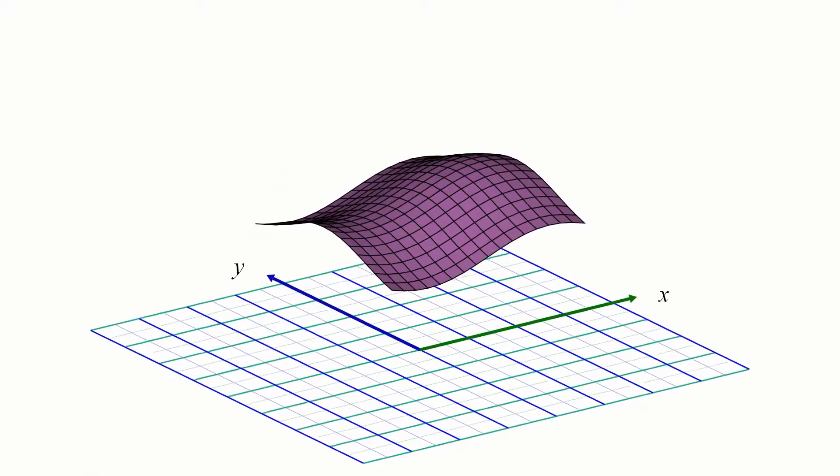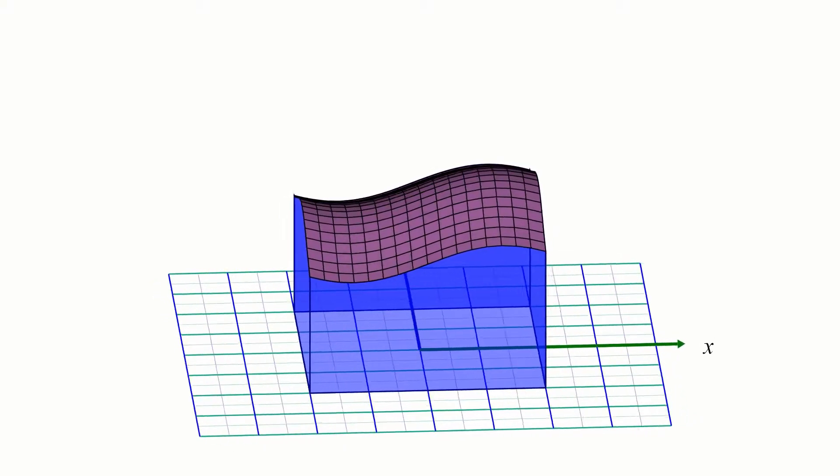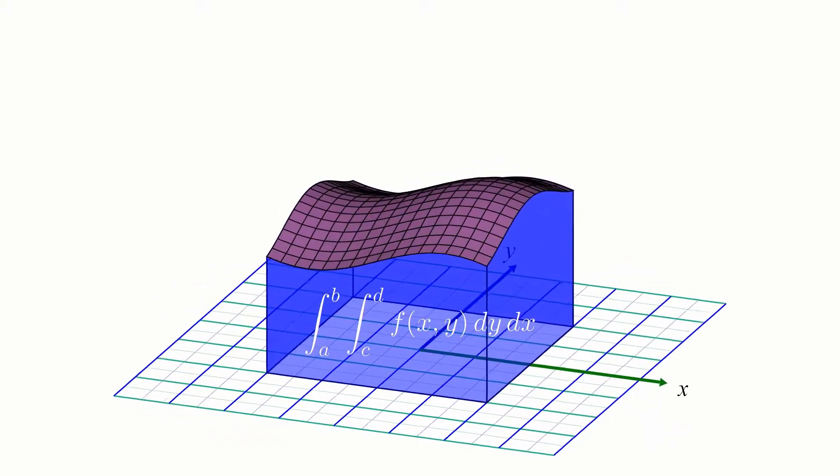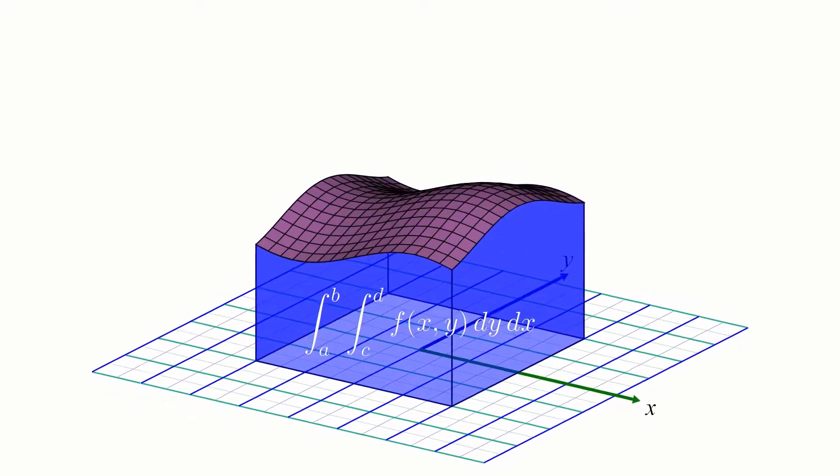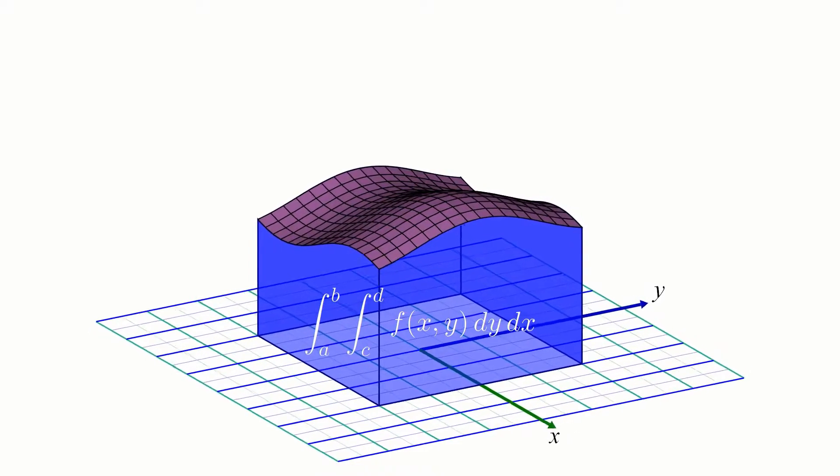In a very similar fashion, a double integral can be used to find the three-dimensional volume under a surface, and the usual way we evaluate a double integral is by doing two integrals one after another, in a construction called an iterated integral, where you take an integral of an integral.